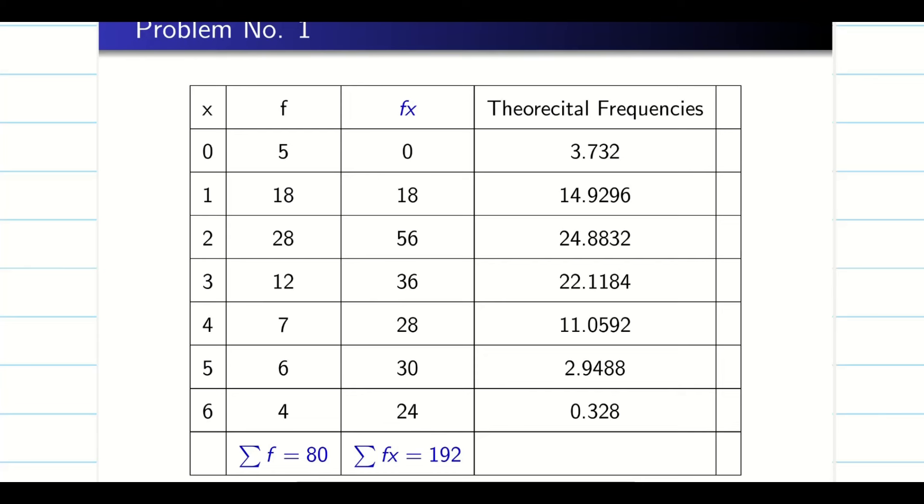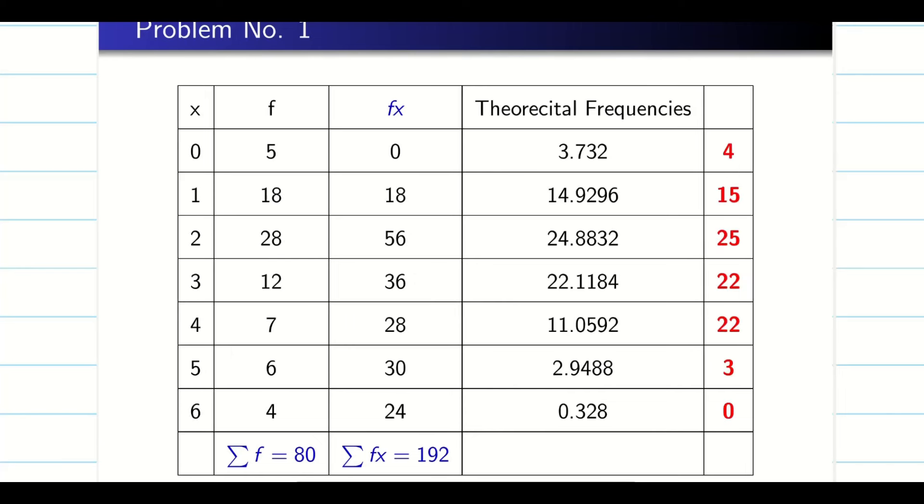Yes. So you get the approximate values of theoretical frequencies. But now, the frequency cannot be in decimal because your frequency is given in numbers. So let us round off guys. It's very simple. Round off to the nearest value. Now you see, this is the frequency. When you follow these chances with binomial distribution, you get a frequency.